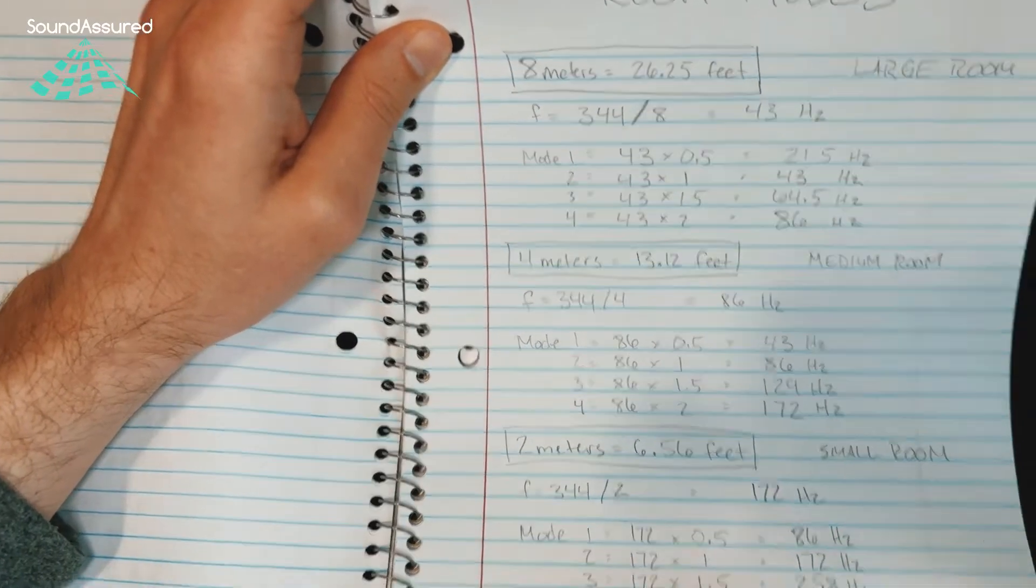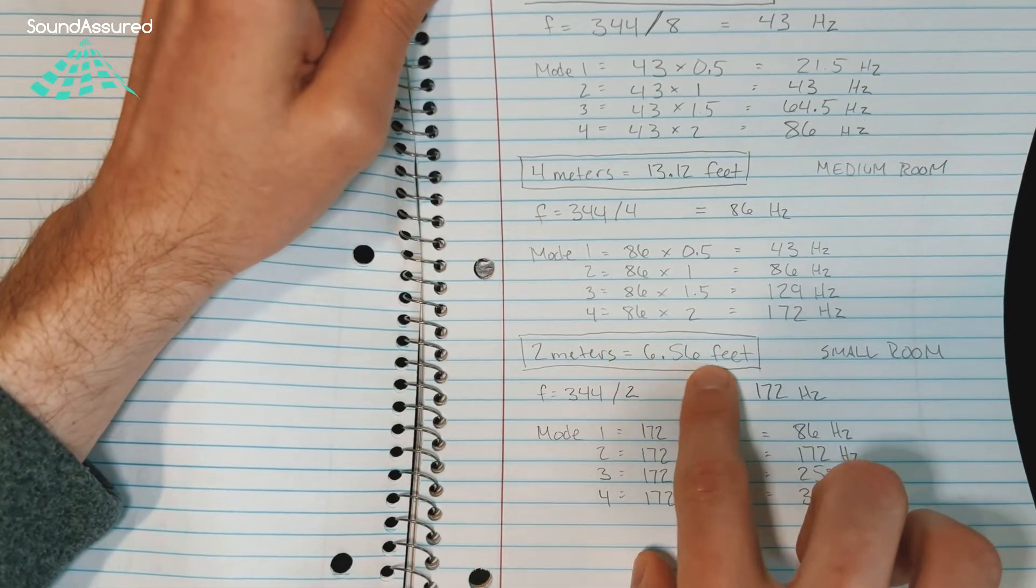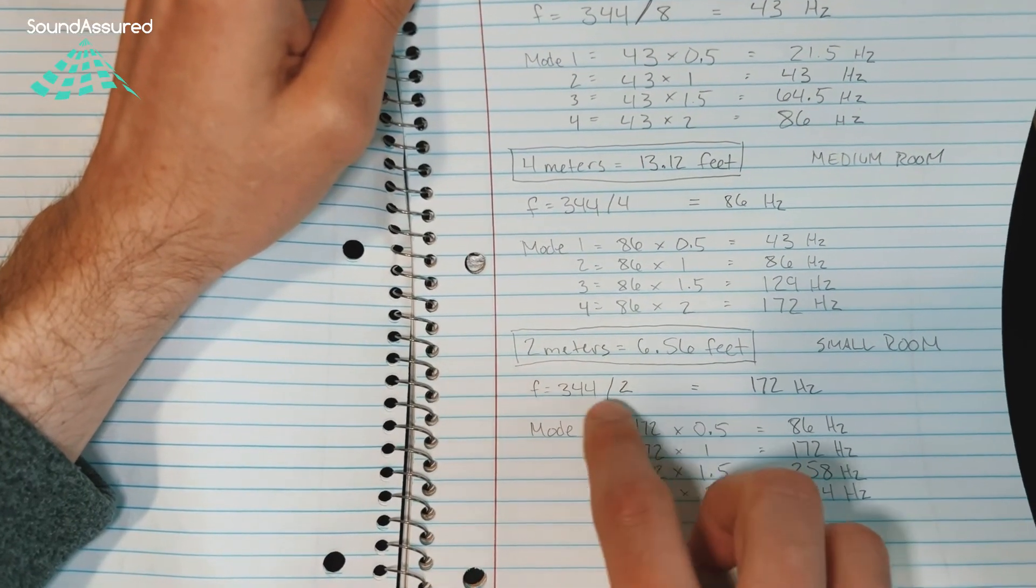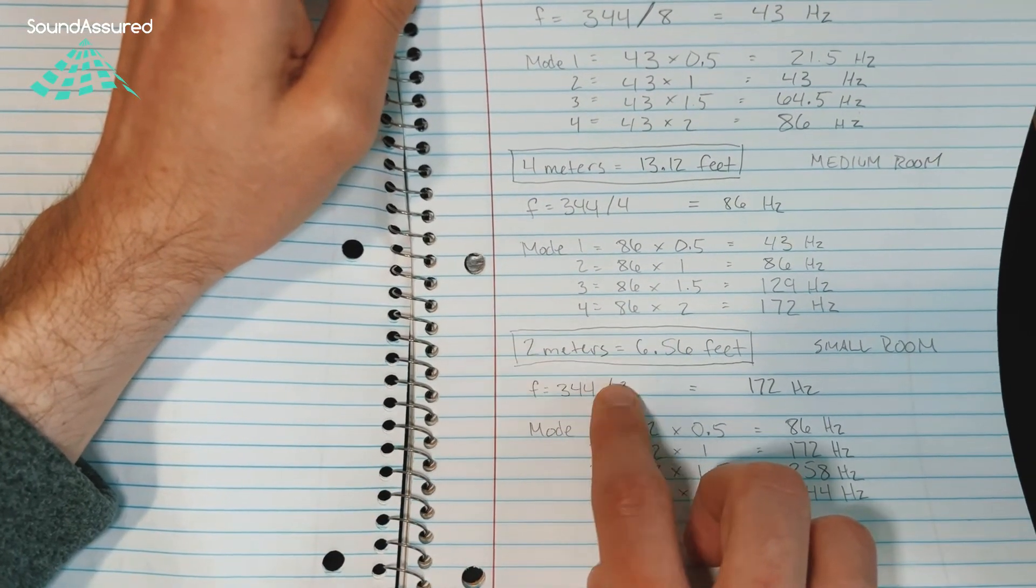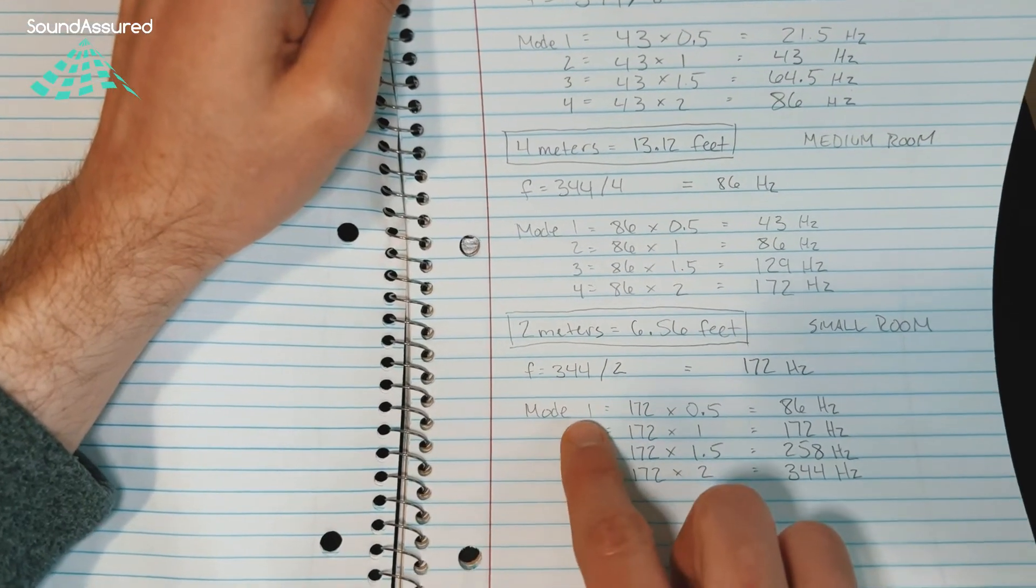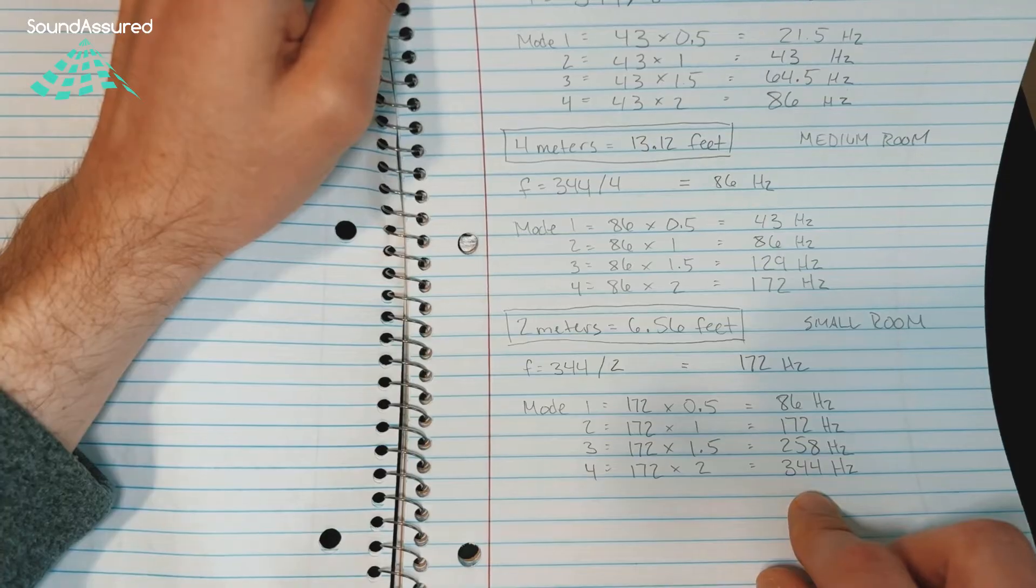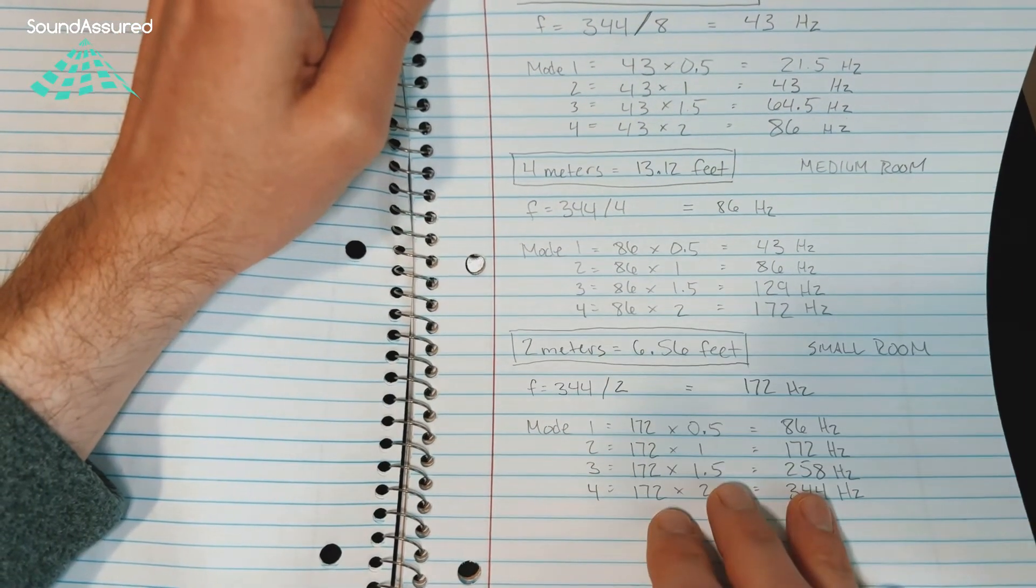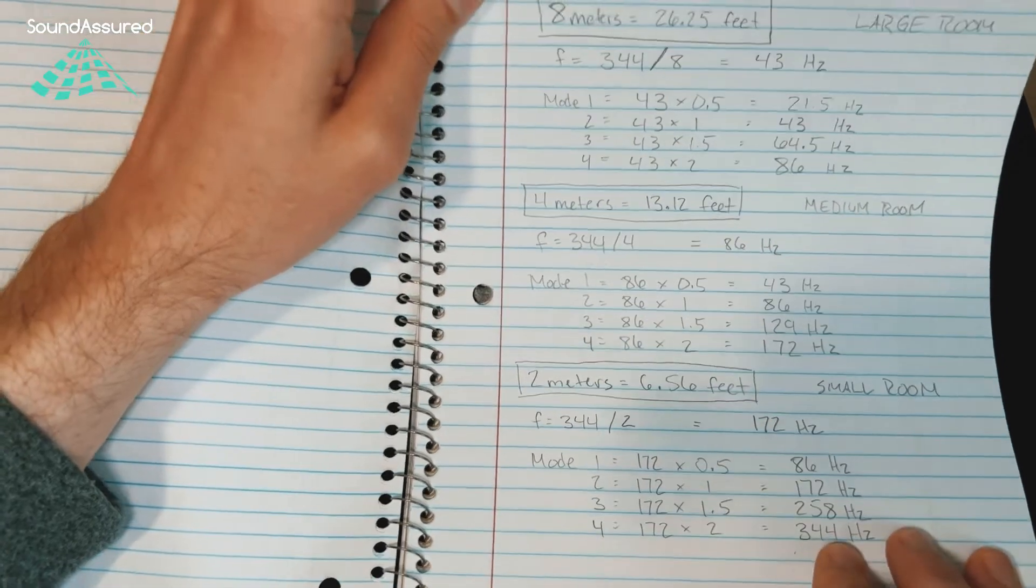Then you go even smaller, 6.56 feet in a smaller room, two meters. So the speed of sound divided by two is 172 Hertz. Then you have all of your modes here. So the smaller rooms have modes in higher frequencies.